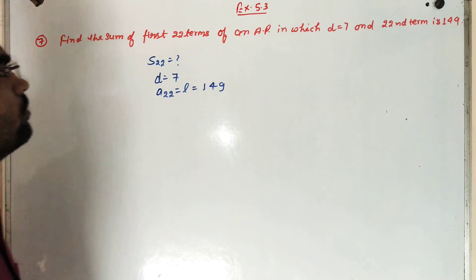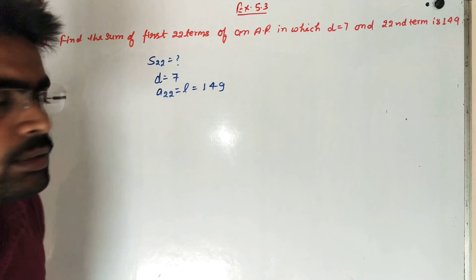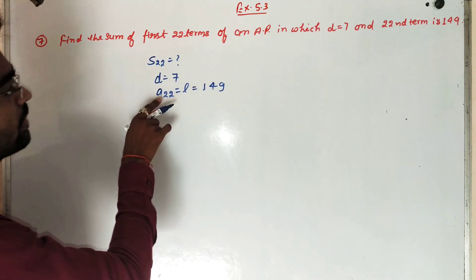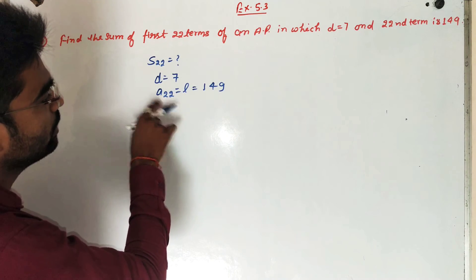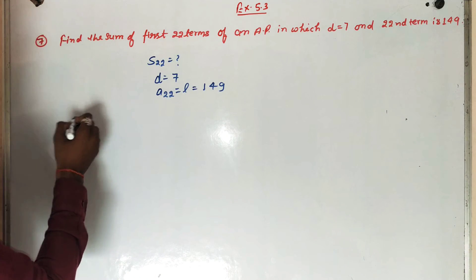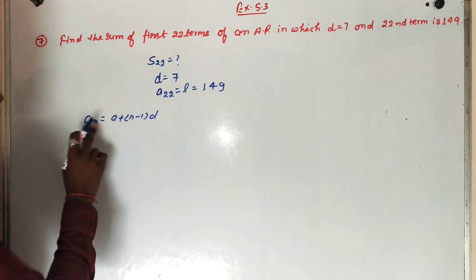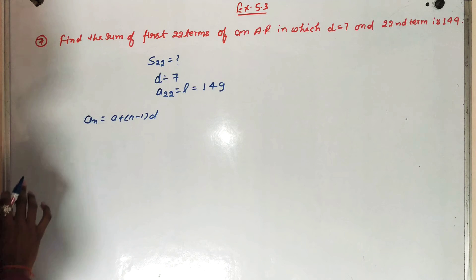So first, we're going to find the first term. AN is equal to A plus N minus 1 into D. And AN is equal to 149.